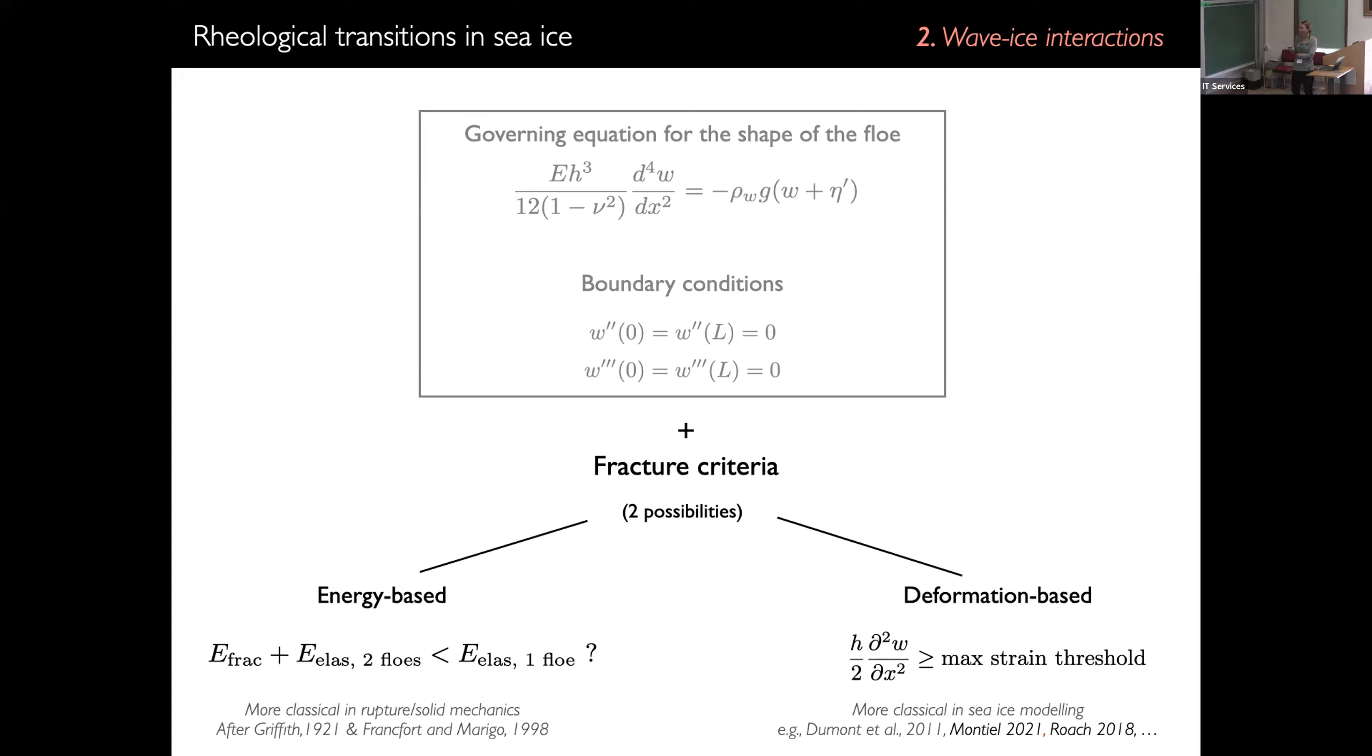And so we solve this model and its particularity is that we actually take the liberty to include two different fracture criteria and test them both. The first one is deformation based. So it's based just that the maximum strain threshold is reached and you break. And the other one is energy based. The first one is much more classical in sea ice modeling and the energy based criteria is really classical in rupture or solid mechanics. And it just says that if you have one floe that's being bent over a wave, it has an elastic energy associated to it. But if you're breaking this floe into two parts, the two parts will have an elastic energy associated to them. And there's an energy associated to the fracturing. If the energy is lower in the fracture configuration than it was in the unfractured configuration, then the floe will break because you're lowering the energy of the system. So this actually is much better explained in Sophie's poster. There's also an attenuation scheme added to this. If you have questions on that, please ask Jean-Pierre.